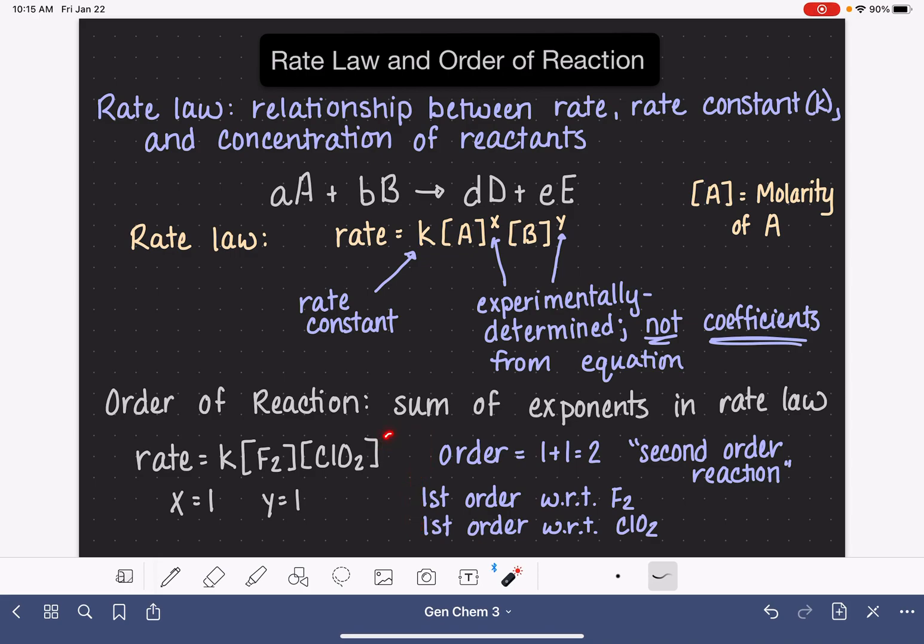If this was a 2, we would say it's second-order with respect to ClO2. If this was a 0, we would say it's zero-order with respect to F2.